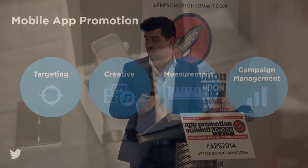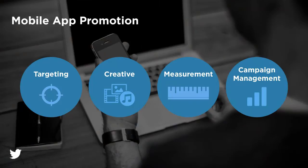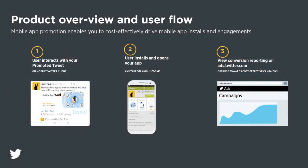So let's deep dive into the products. Mobile app promotion is now a robust and comprehensive suite that enables developers and marketers to drive installs through Twitter. It has extended far beyond a single app card and has four core pillars: the first is targeting, the second is creative, the third is measurement, and the fourth is campaign management. All of those in combination form the foundation of a very compelling, viable product.